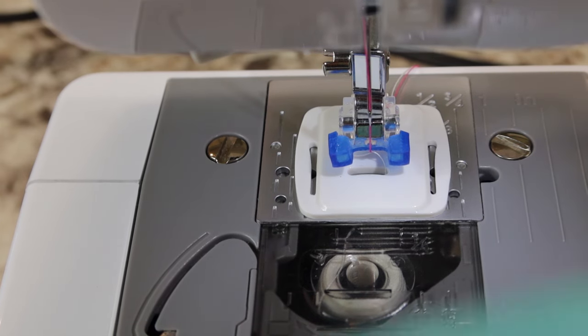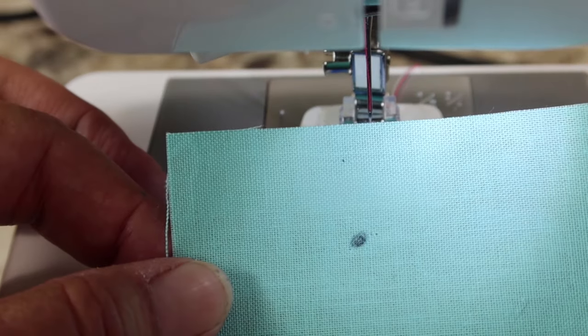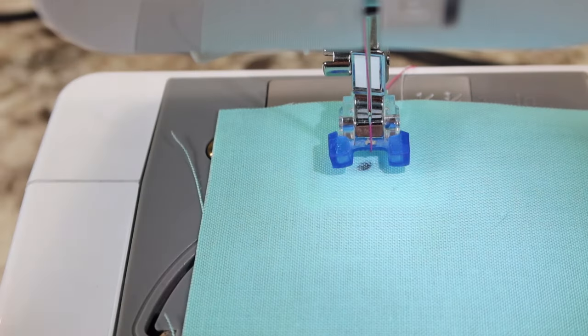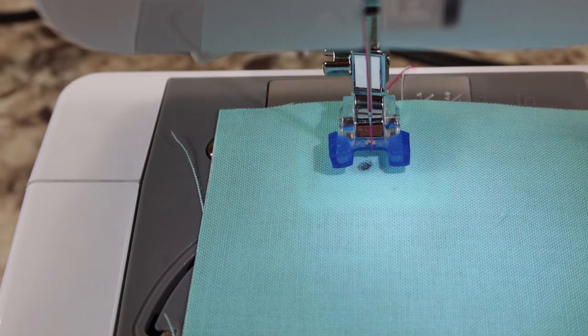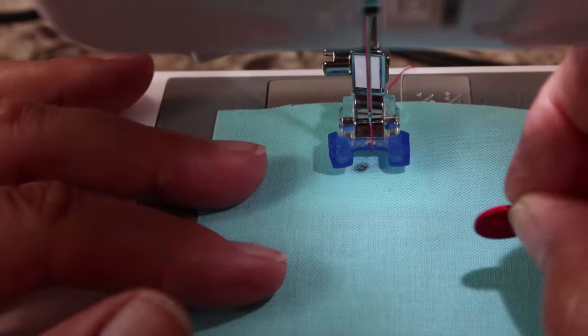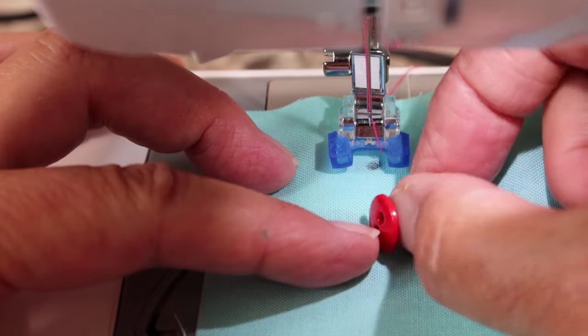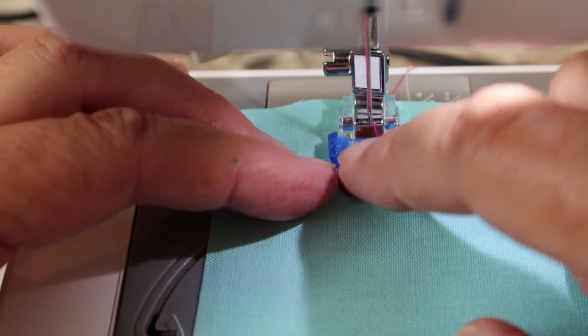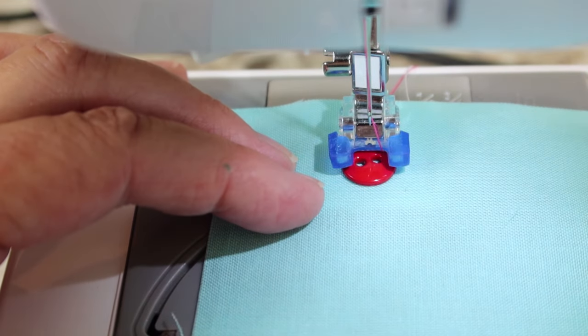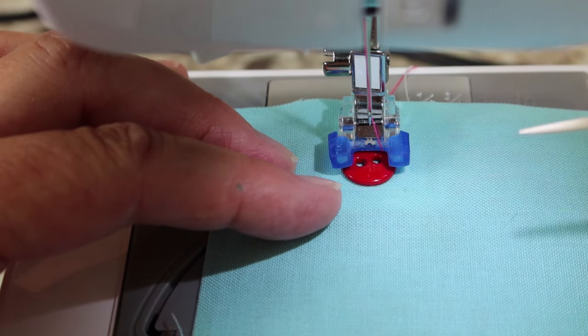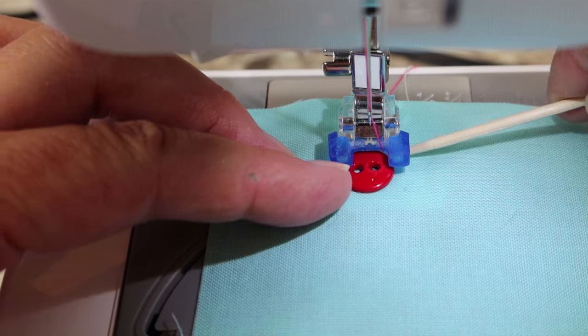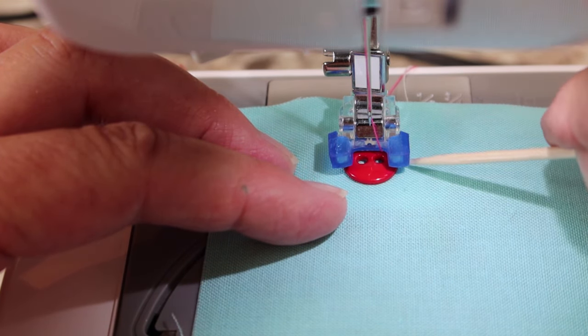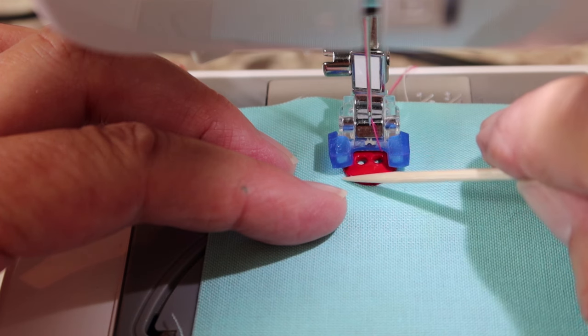Okay, we have all that set. So here's our fabric. I want the button right there where that dot is. So I'm going to put that right there in the middle. And then I'm going to slide my button right in there on top. And sometimes I have to use a toothpick to tweak it a little bit to get it as close to the back of that foot without being too far.